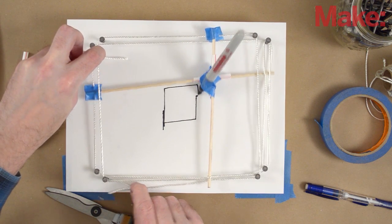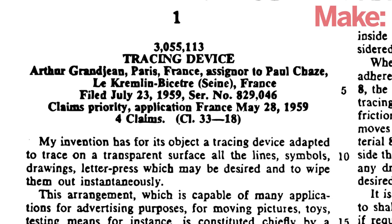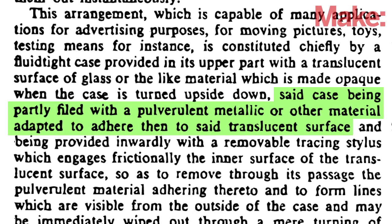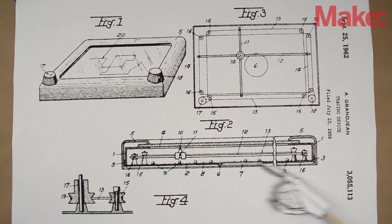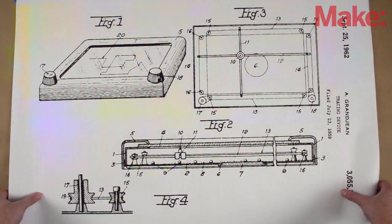The real magic comes from what covers the inside of the screen. According to the patent, aluminum powder or other pulverulent material is added along with glass beads. These help spread the powder evenly when you turn it upside down and shake it.